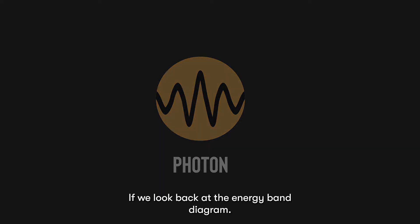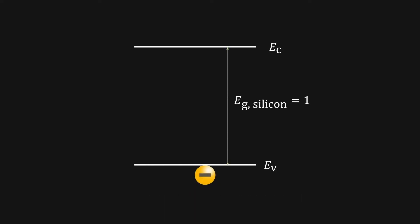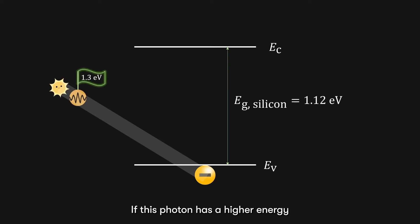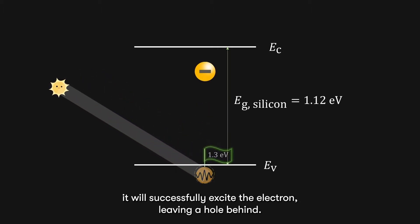If we look back at the energy band diagram, when light shines into silicon, the electron absorbs a photon. If this photon has a higher energy than the energy band gap of silicon, say for example, 1.3 electron volts, it will successfully excite the electron, leaving a hole behind.